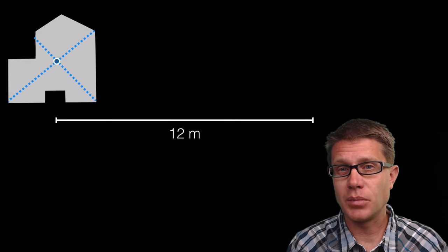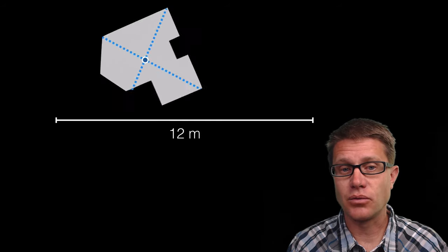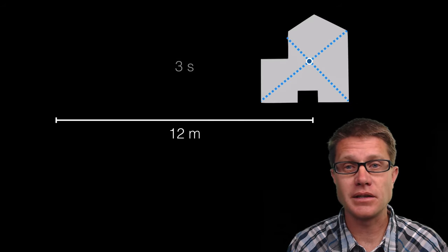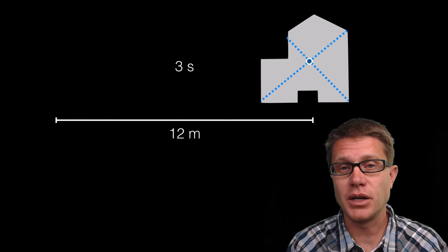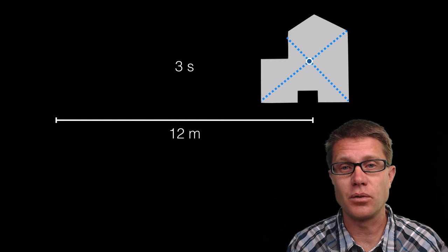But now let us say we do it again but it rotates. Let us say it is rotating about that center of mass. How do I figure out its velocity now? Same way. I am going to take that 12 meters divided by 3 seconds. So it is going to be 4 meters per second.